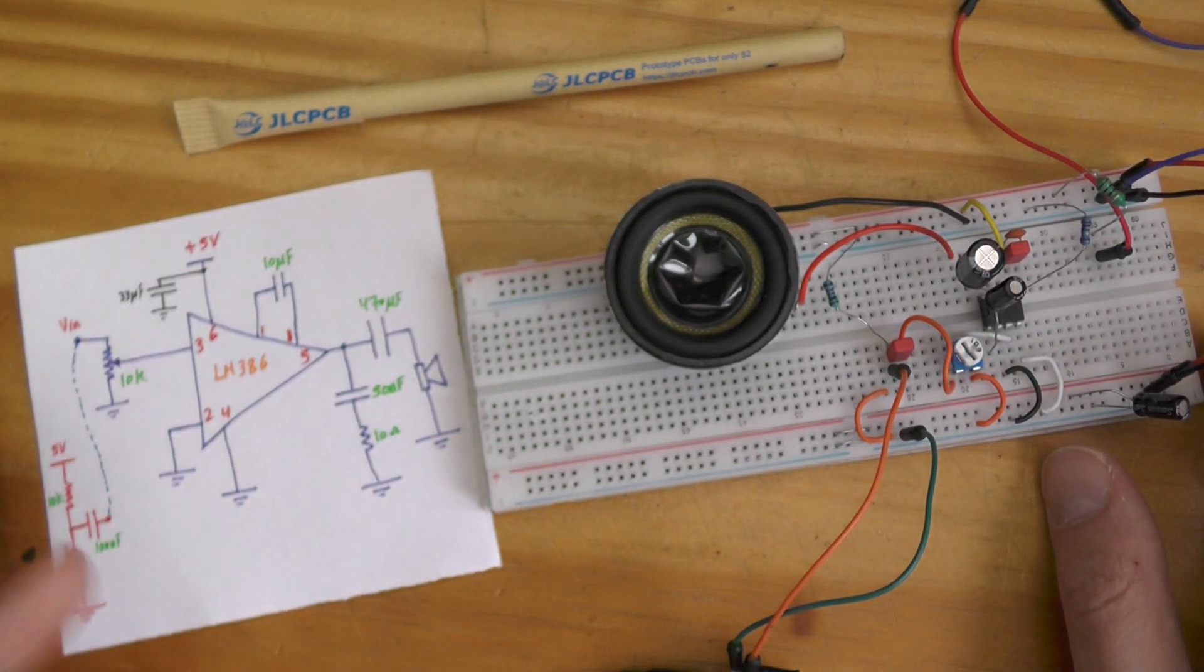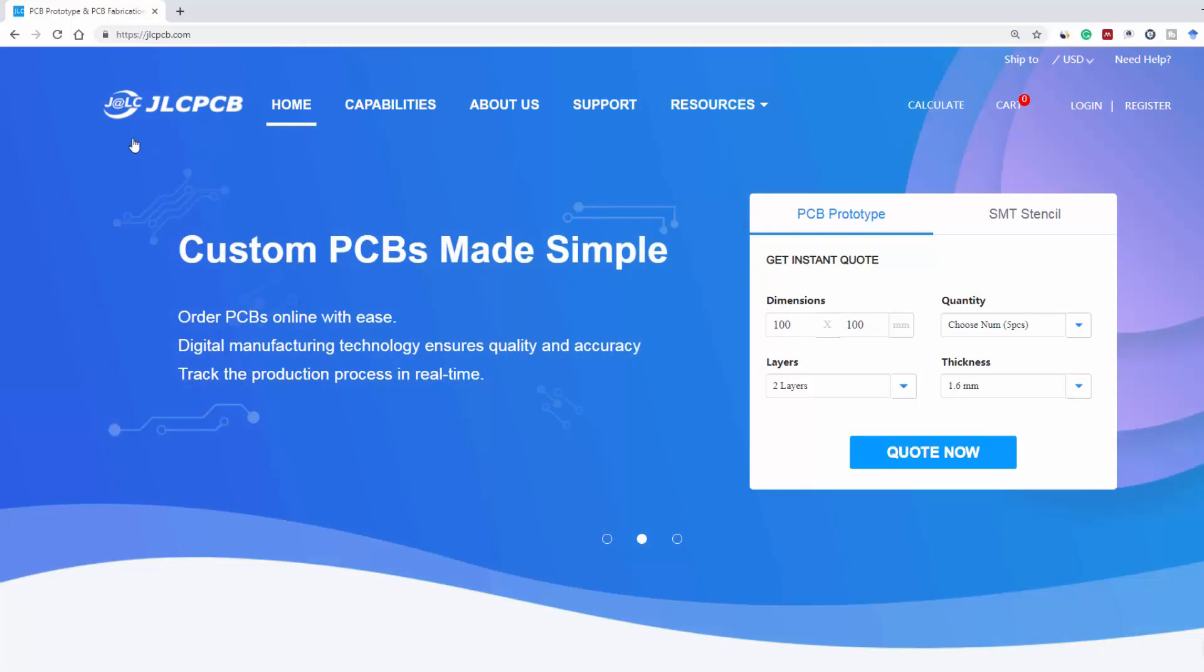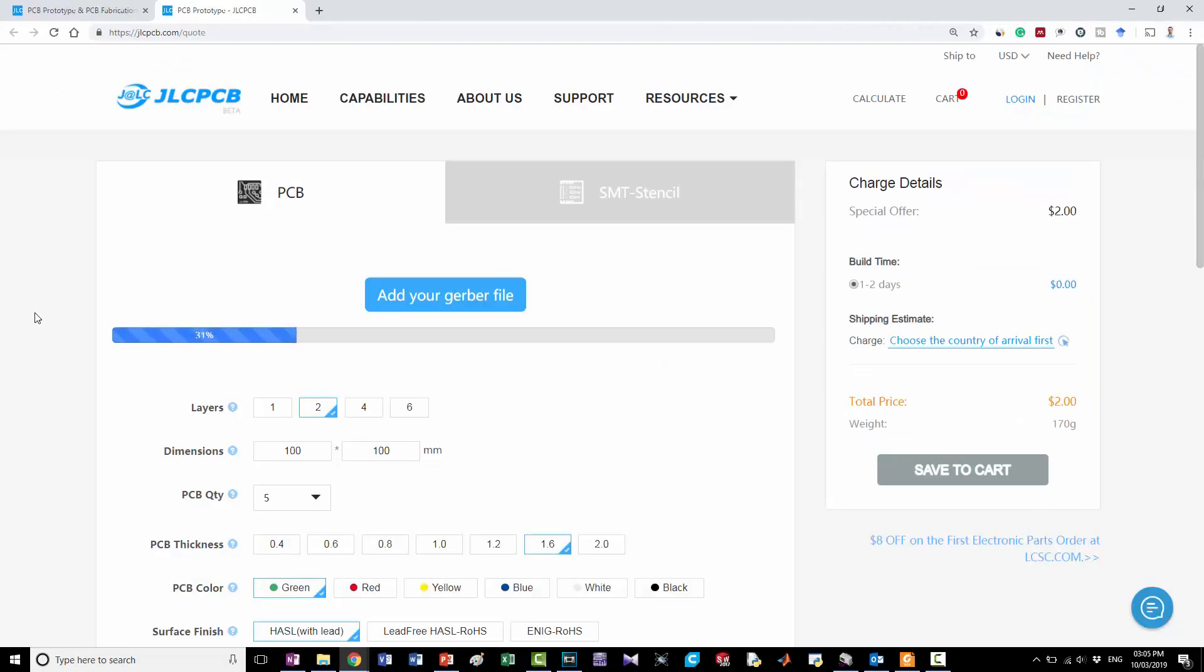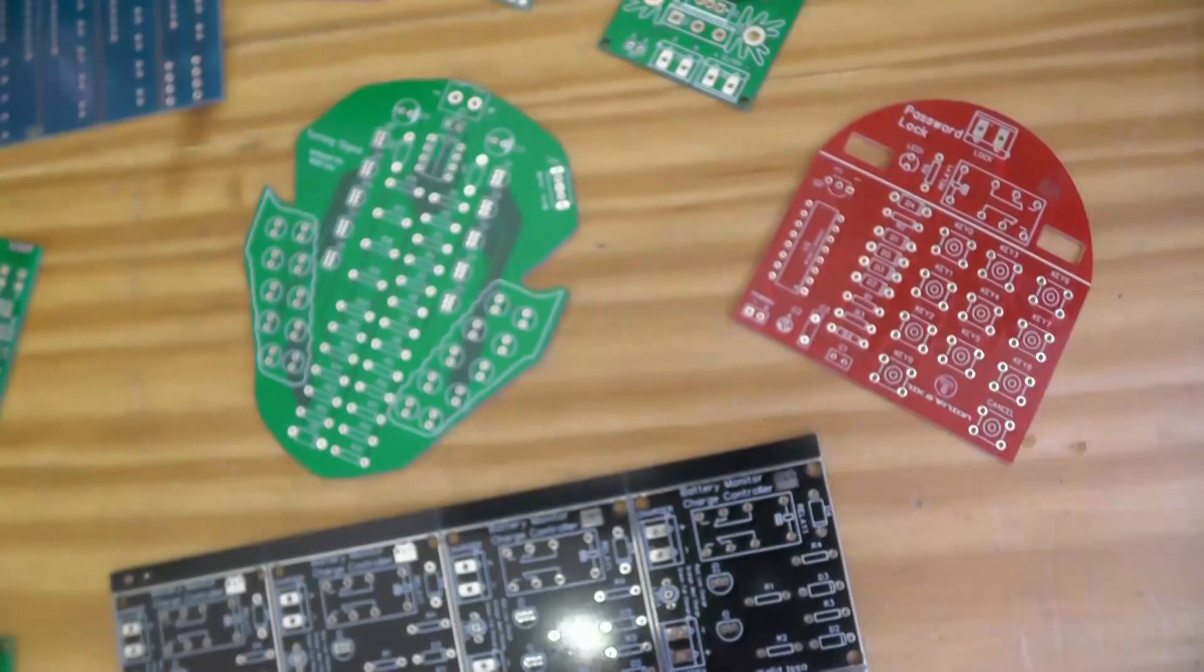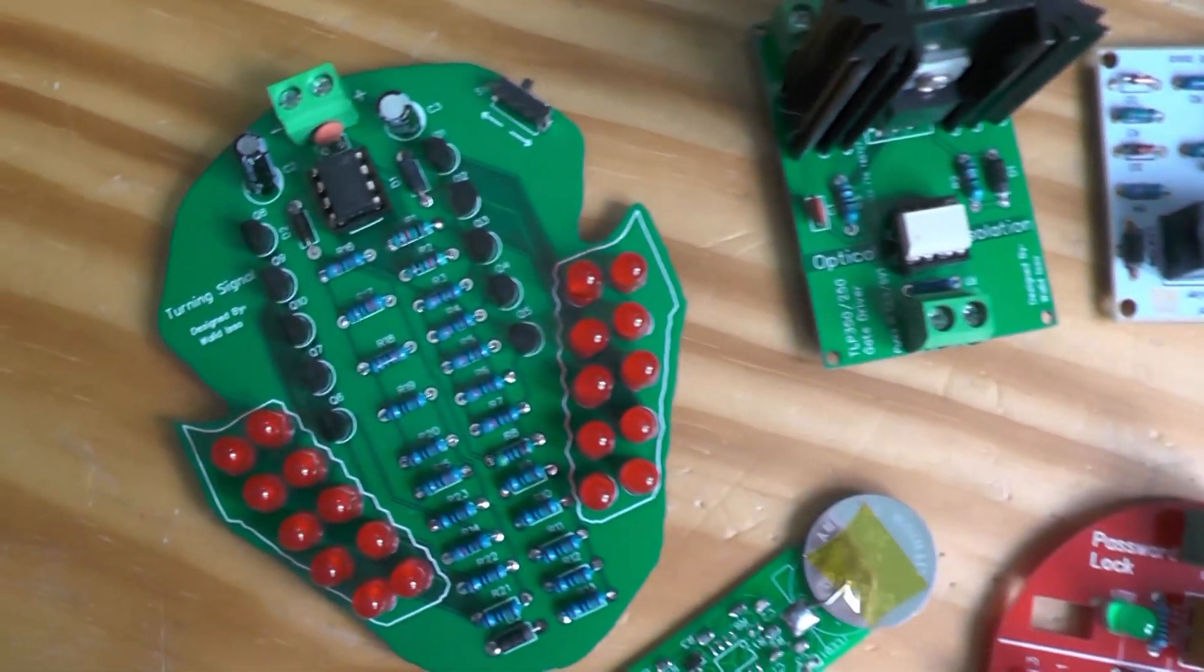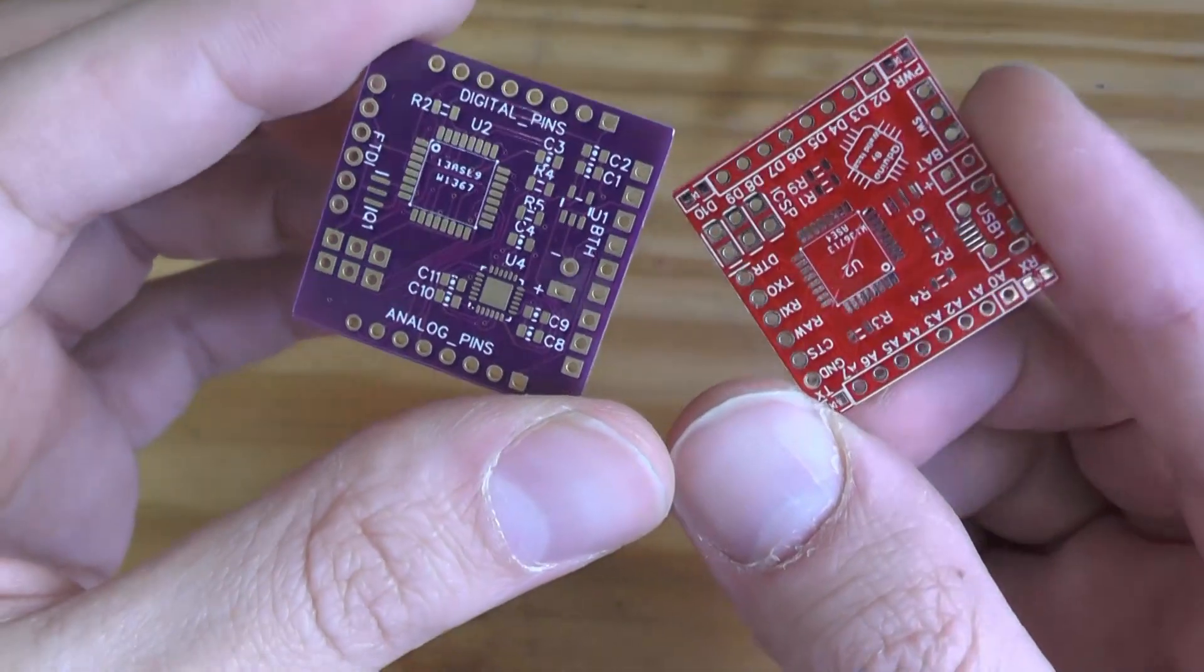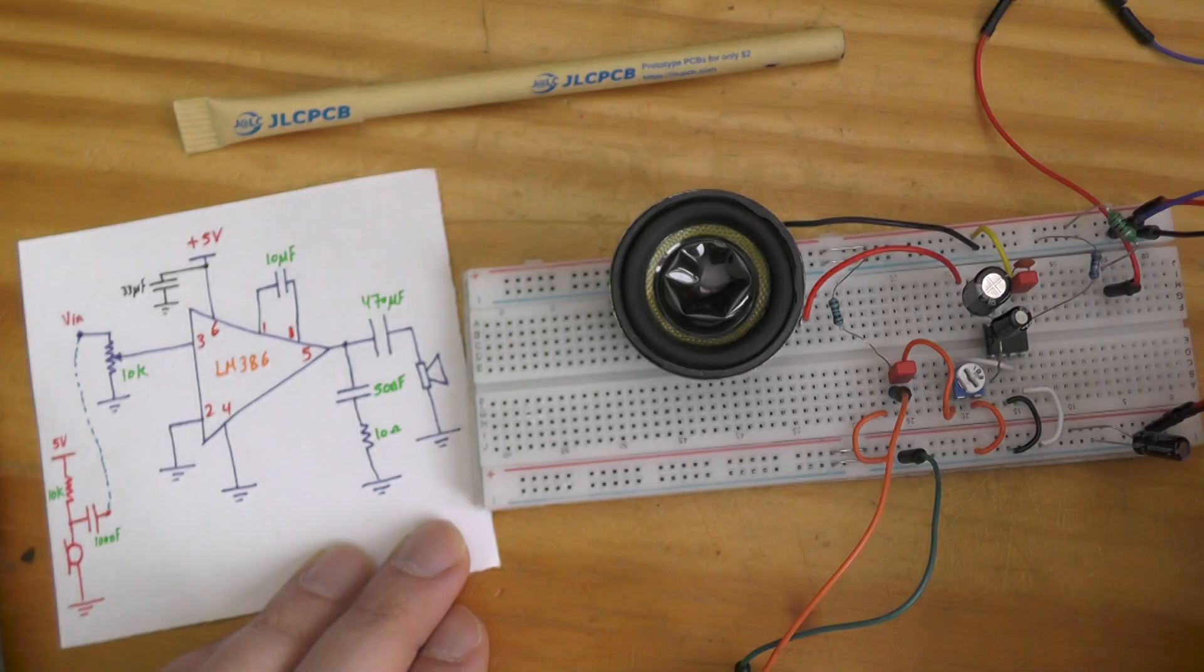It can be as portable as well for some applications like recorders and mp3 players. This video is sponsored by JLCPCB, the biggest PCB manufacturer from China who manufactures 10 PCBs with the dimension of 10 by 10 centimeters for just two dollars. They're both super good quality and the process time is just within 24 hours. Best of all, their PCBs are cheaper than from most other PCB companies. I use their services all the time for all kinds of PCBs.